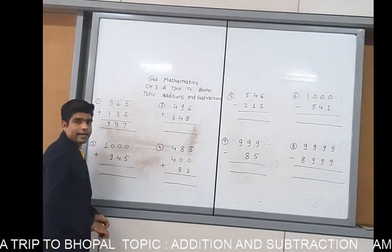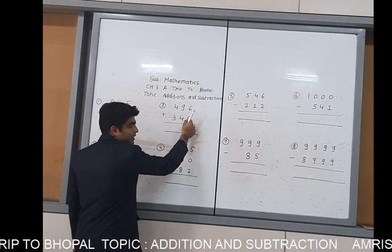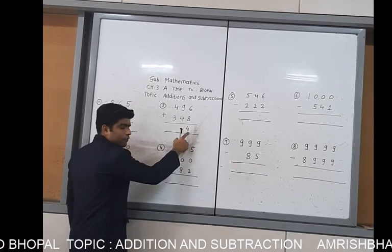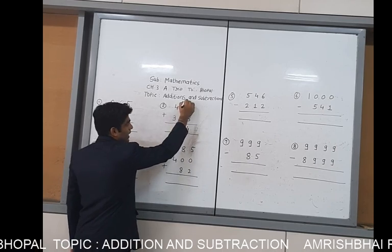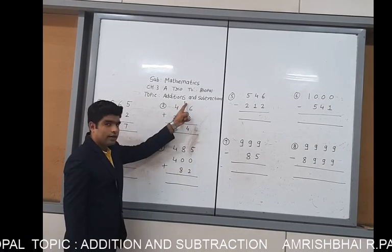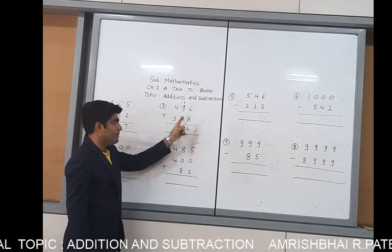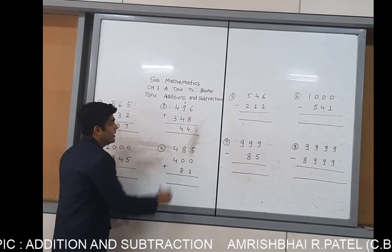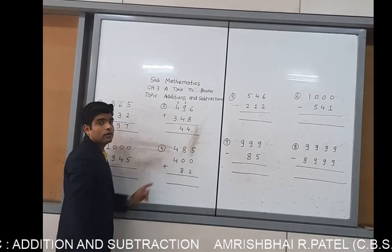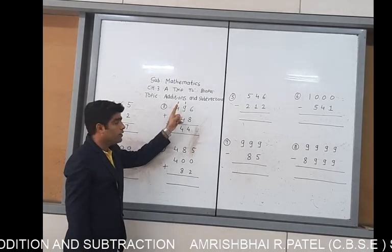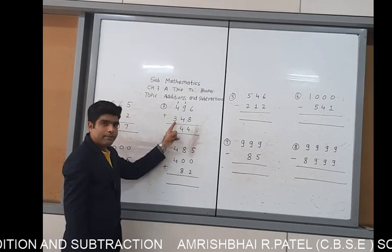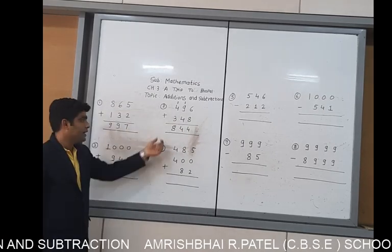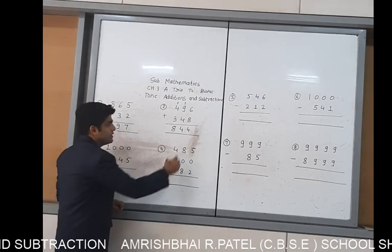Start from the second example. 6 plus 8 is 14. This gives us 4, and 1 is carry. 9 plus 1 is 10. 10 plus 4 is 14 — this is also 4, and 1 is carry. 4 plus 1 is 5. 5 plus 3 is 8. Your answer is 844. This is our second example.